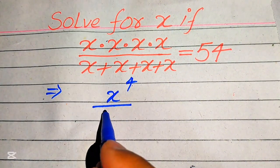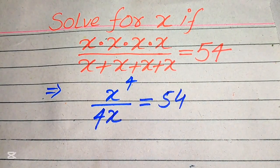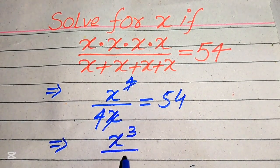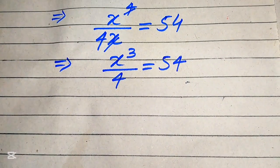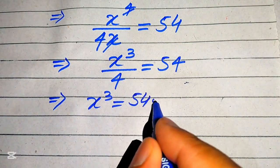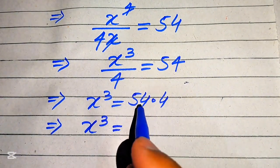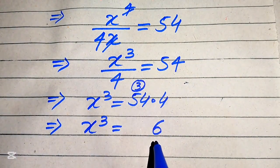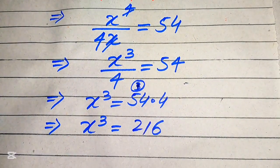So x added 4 times is written as 4 times x, and this equals 54. Now this x cancels with the x in the denominator, and we get x cubed divided by 4 equals 54. Moving the 4 to the right-hand side, x cubed equals 54 times 4, which gives us x cubed equals 216.